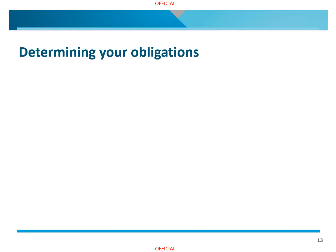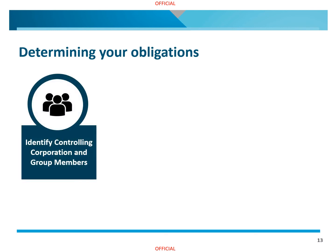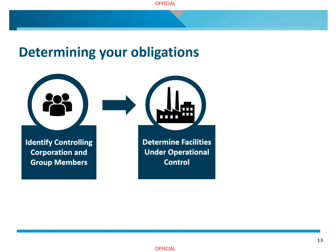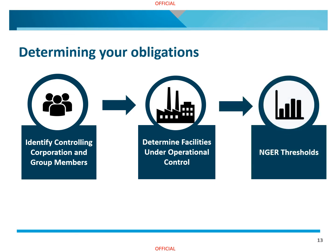To determine your obligations under the NGER scheme, you need to identify your controlling corporation and your controlling corporation's group members, determine the facilities under the operational control of your controlling corporation and its group members, and understand the NGER reporting thresholds. Further information and guidance on this process is included in the Determining Obligations under NGER video of this training video series. If in doubt, please contact us. We have staff who are available to help you with your queries.